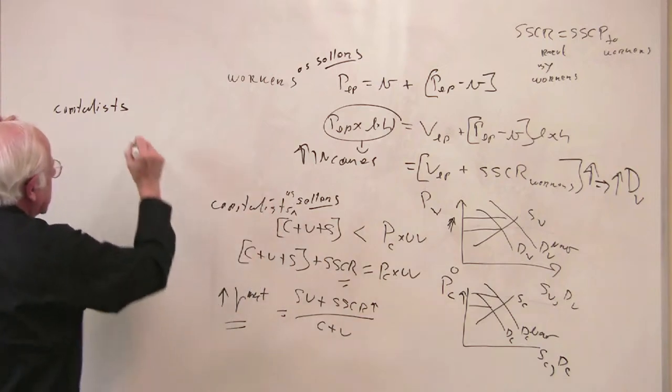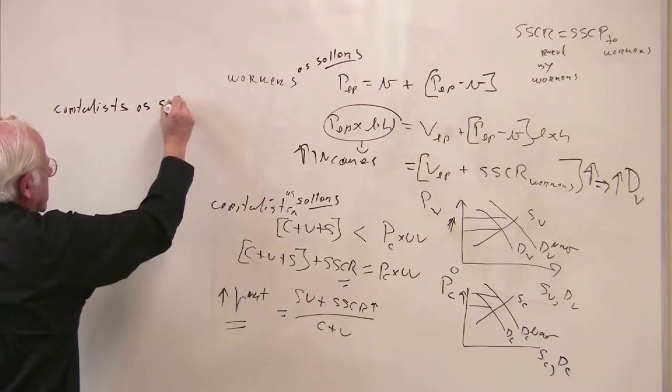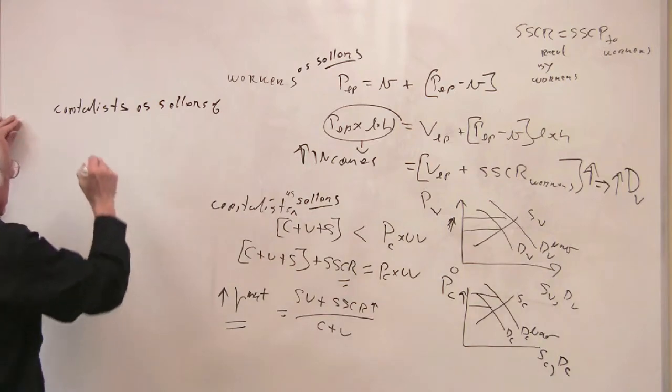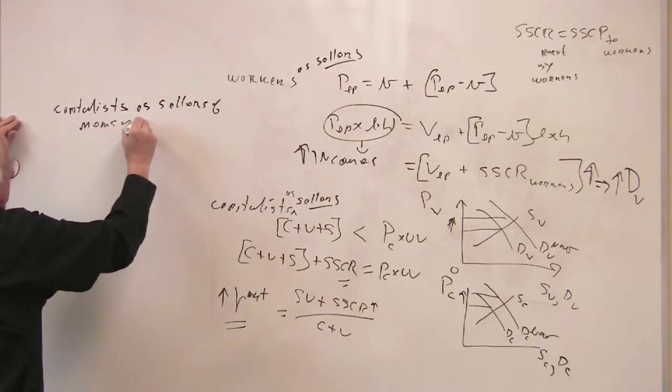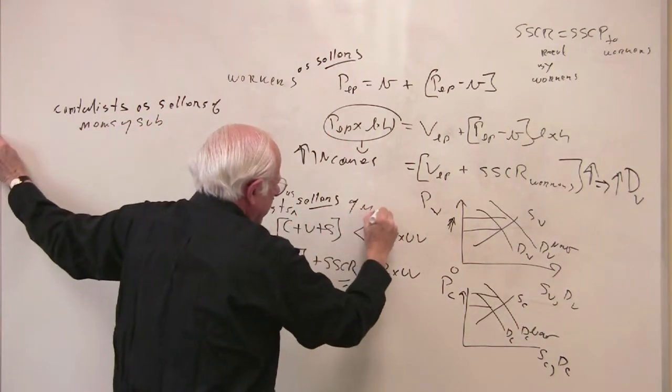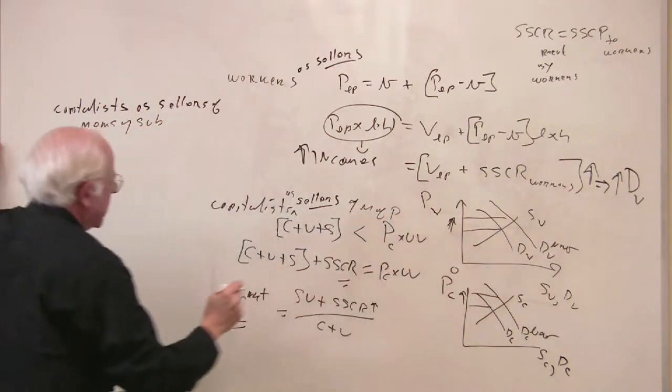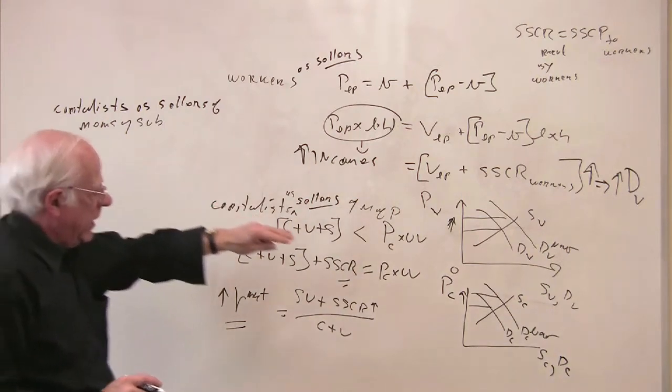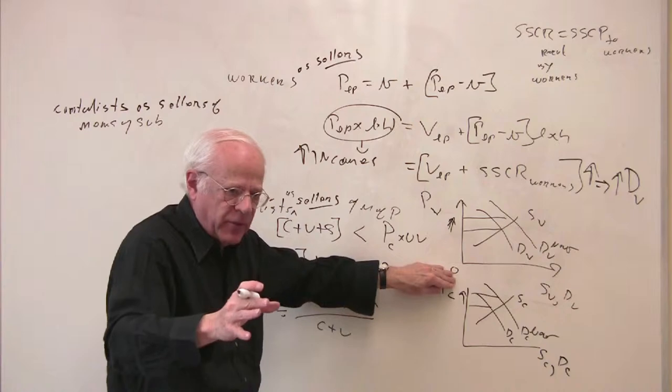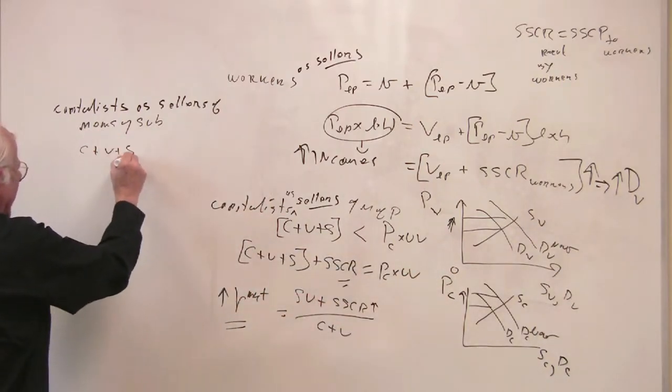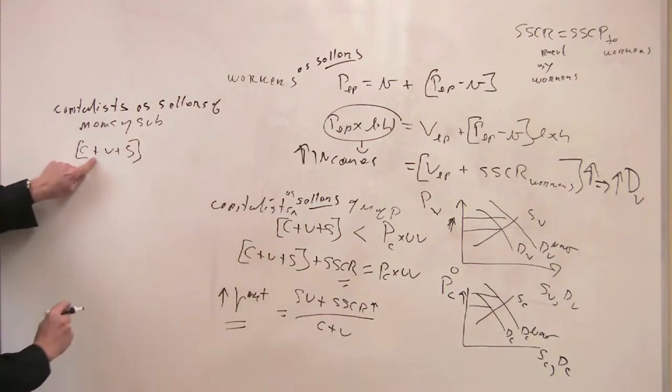Capitalists as sellers of not means of production, but means of subsistence. Capitalists as sellers of means of production. That's this business over here. So these capitalists now enjoy a wonderful situation in which they can sell their goods, C plus V plus S. That's what it costs them to produce that. So that's what it costs.